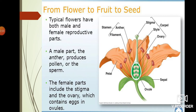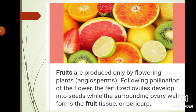Now we are going to see about how fruits and seeds are produced. Fruits can only be produced by flowering plants. Non-flowering plants cannot produce fruits. After pollination of the flower, the fertilized ovules develop into seeds. The surrounding ovary will develop into fruit.